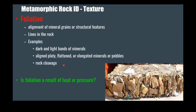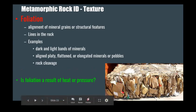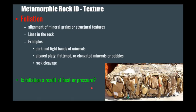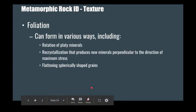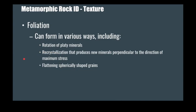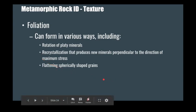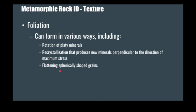Rocks that have lineation are also categorized under foliated rocks. These are rocks that have aligned minerals in just one line, not in a plane. Foliation can form in different ways during metamorphism: you could be rotating platy minerals, recrystallizing old minerals into new minerals perpendicular to the direction of maximum stress, or flattening spherical-shaped grains — like in a metaconglomerate where pebbles are squished. So rotation, recrystallization, and flattening are all common ways foliation forms.